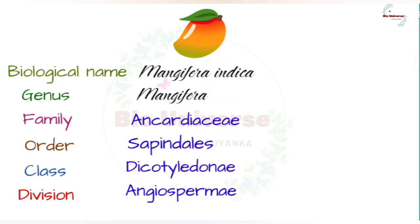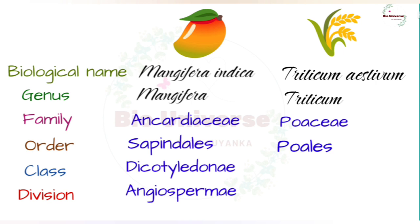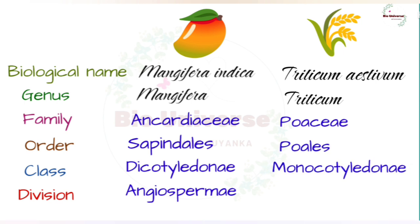The biological name of wheat is Triticum aestivum. It belongs to genus Triticum, family Poaceae, order Poales, class Monocotyledonae, and division Angiospermae.